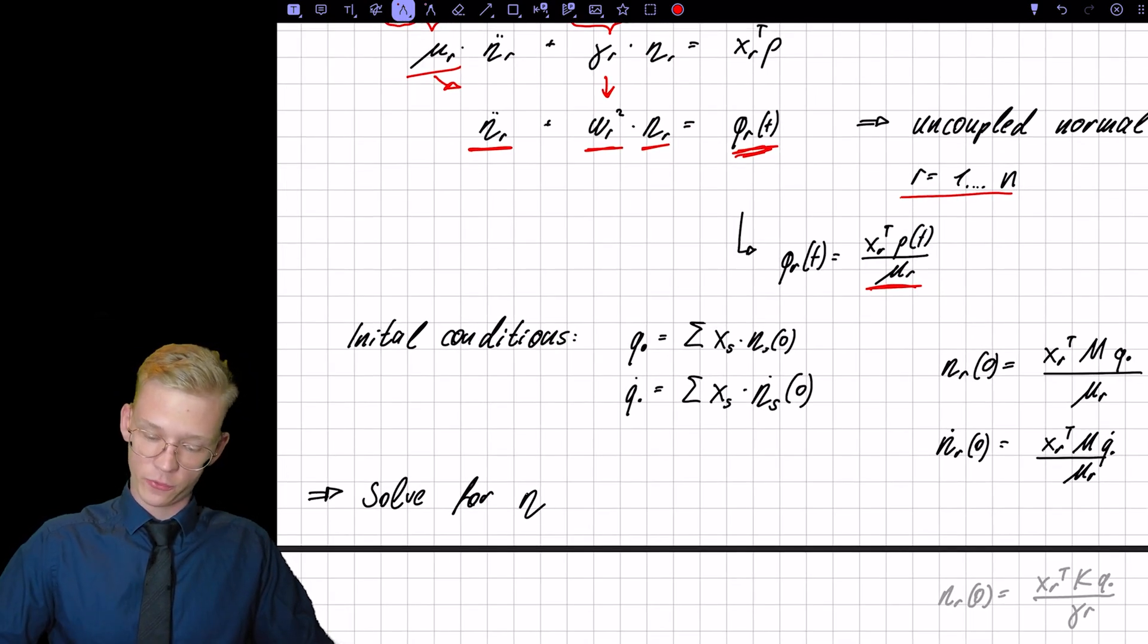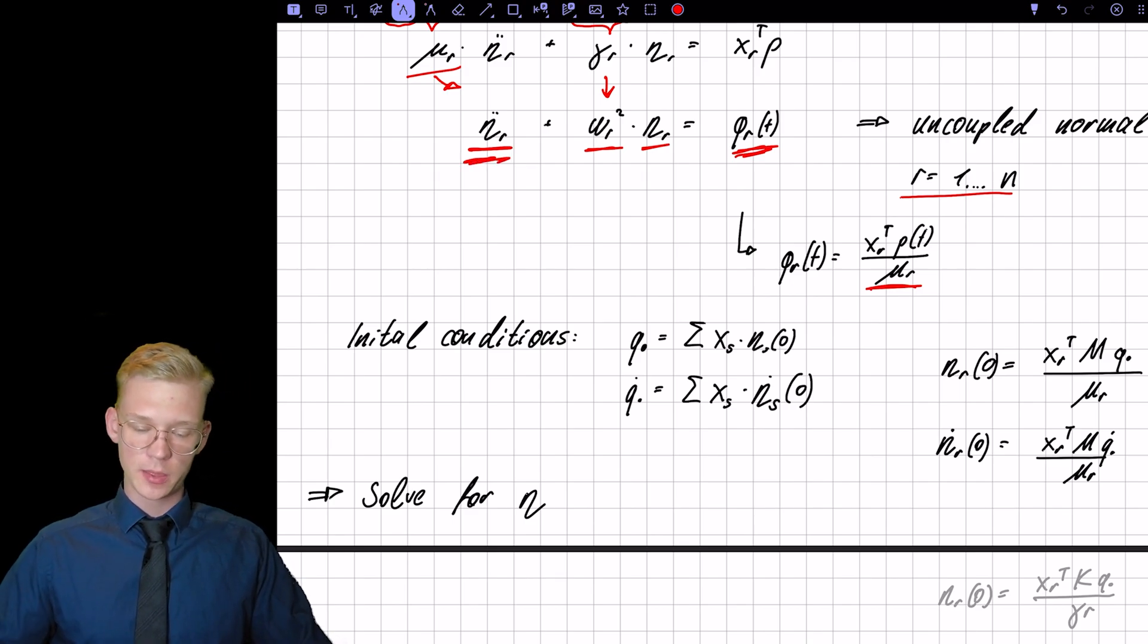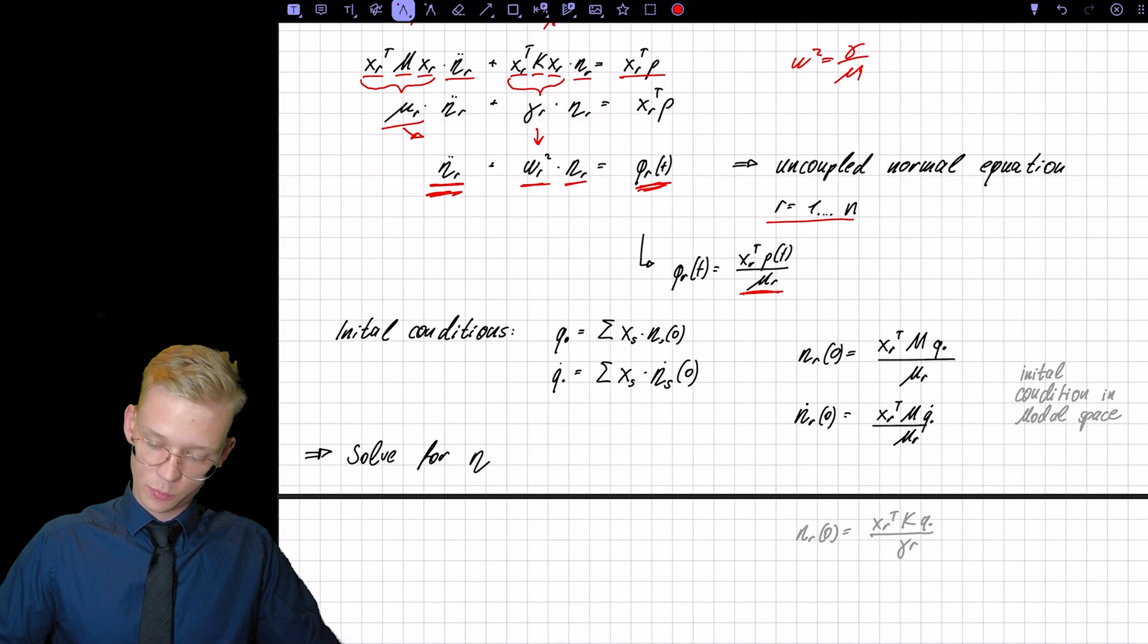And because we have a derivative twice in time, we also need those initial conditions. And we get those initial conditions by also projecting into the modal space.